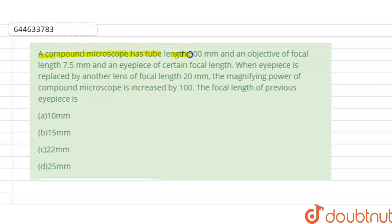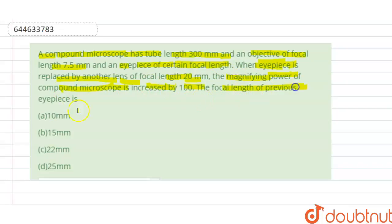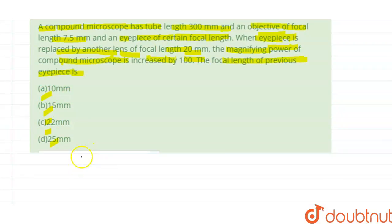A compound microscope has tube length 300 mm and an objective focal length of 7.5 mm. When the eyepiece of a certain focal length is replaced by another lens of focal length 20 mm, the magnifying power of the compound microscope is increased by 100. We have to find the focal length of the previous eyepiece from the given options.